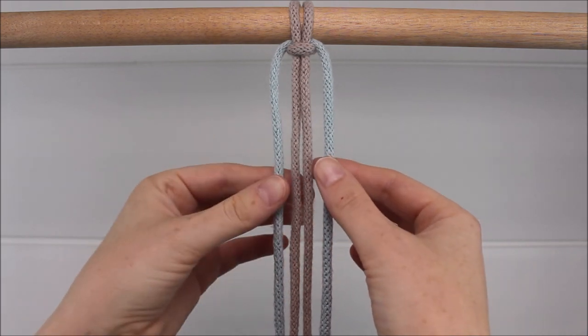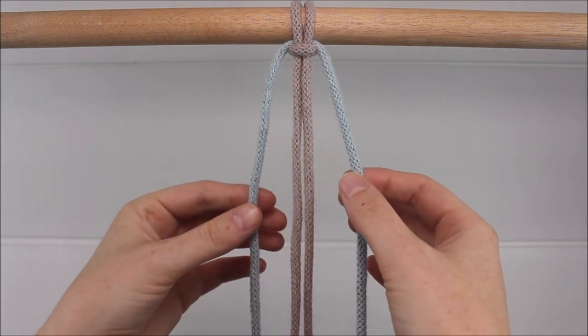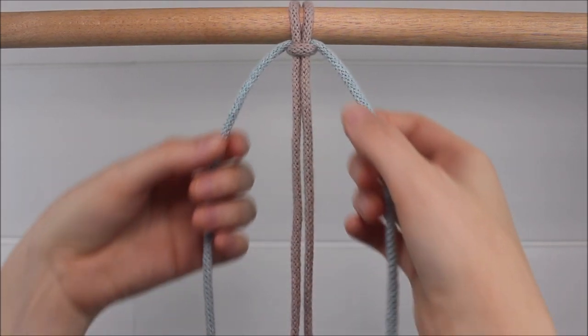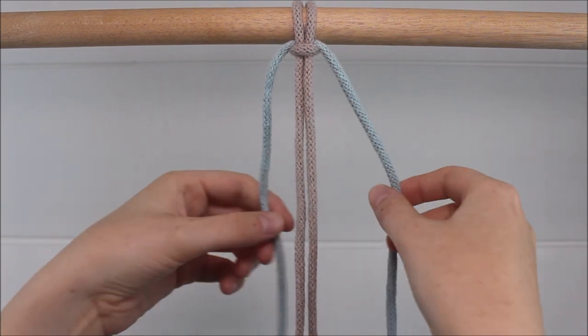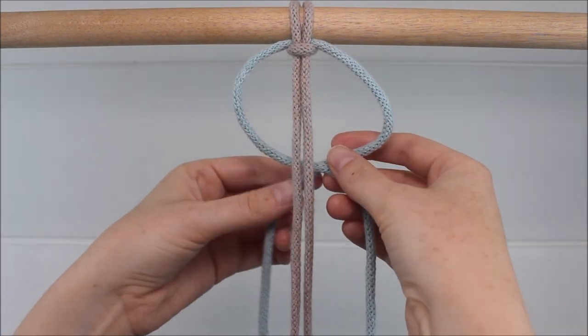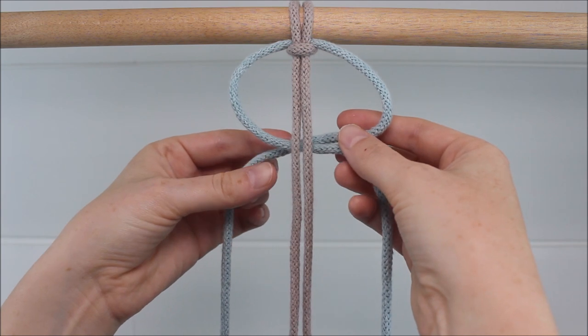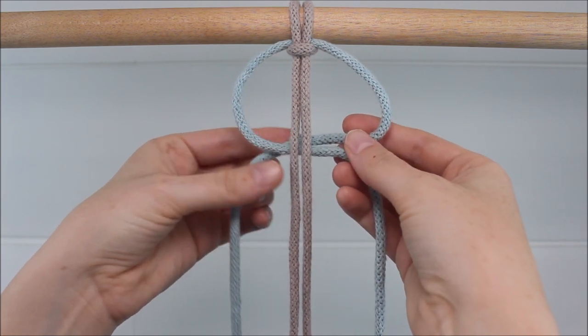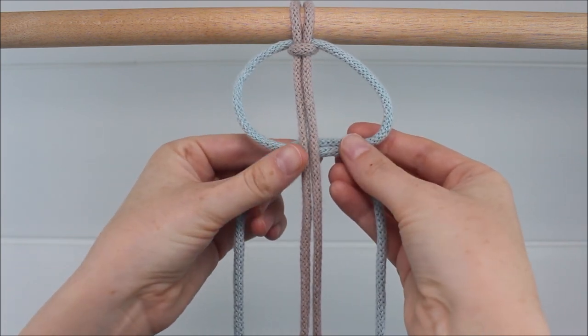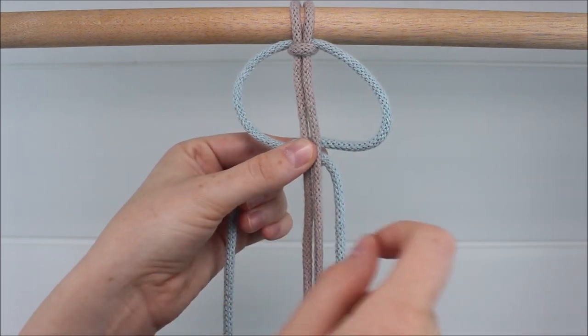Now our first step is to tie a Reverse Endless Falls Knot. To do this, I'm going to take the two outer cords here and cross them behind the two in the middle, forming a loop by taking the left cord over the right. It will look like you have two loops, one on the right and one on the left.